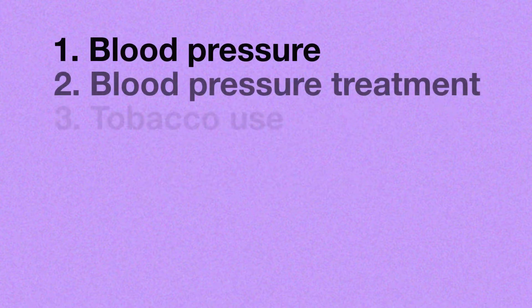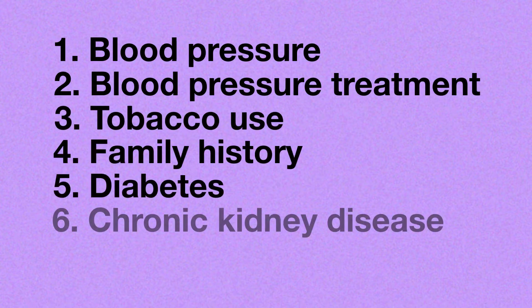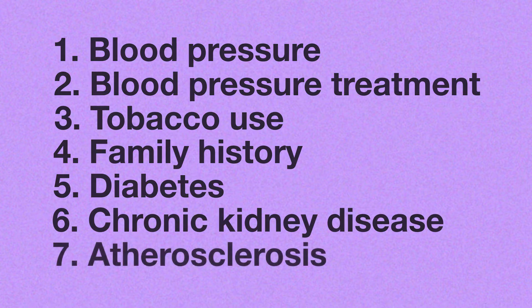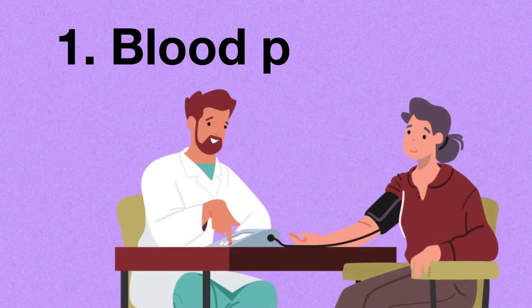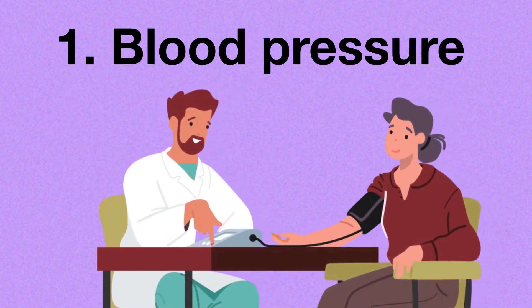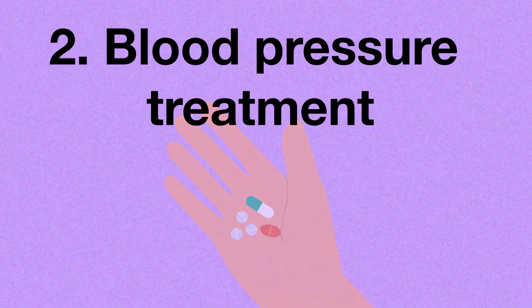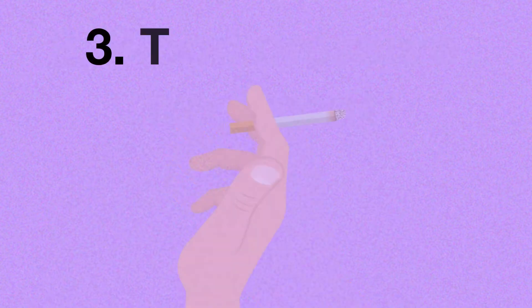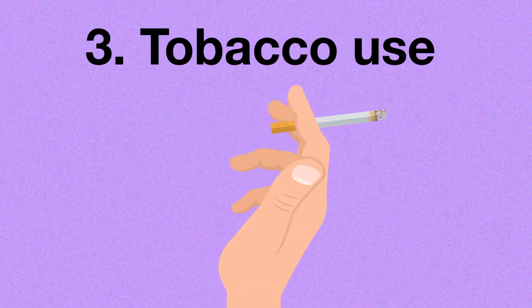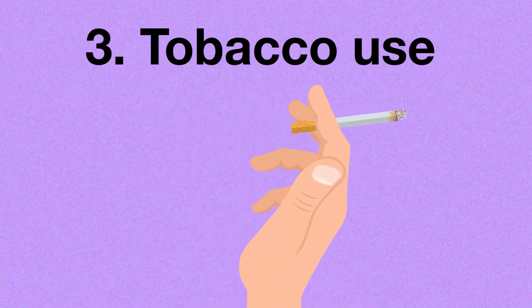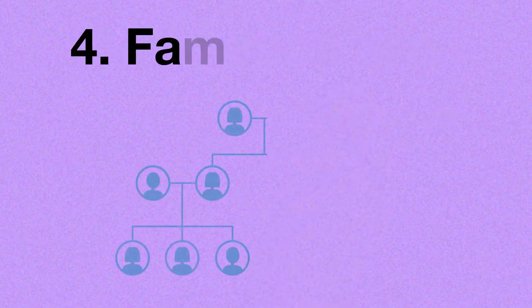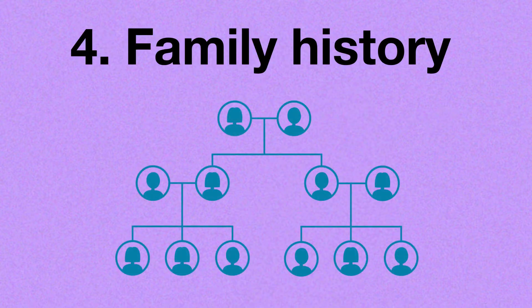Your doctor will complete 7 questions on the lab requisition form for you. They will measure and record your blood pressure — high blood pressure increases your risk. They will record if you're being treated for high blood pressure. They will ask if you use tobacco, as tobacco use increases your risk. They will also ask about your family history of CVD.